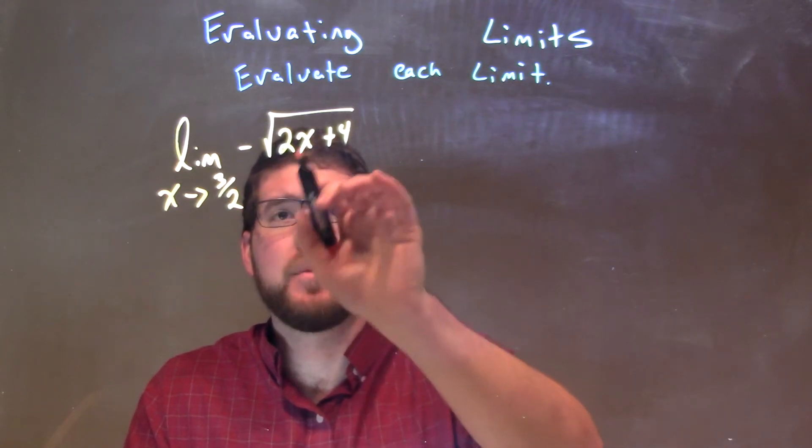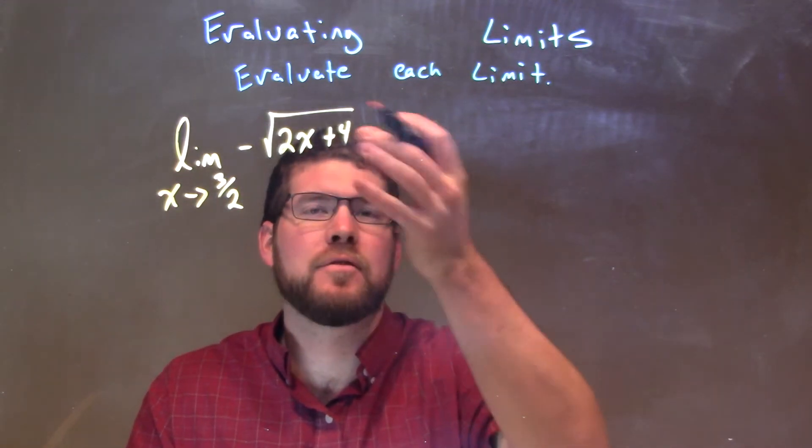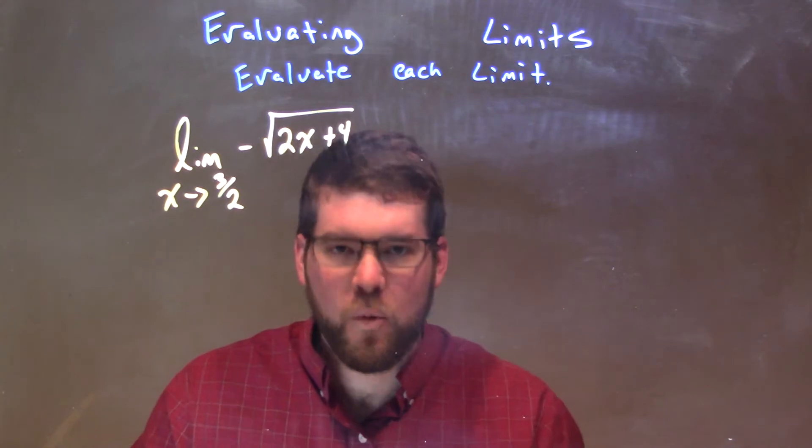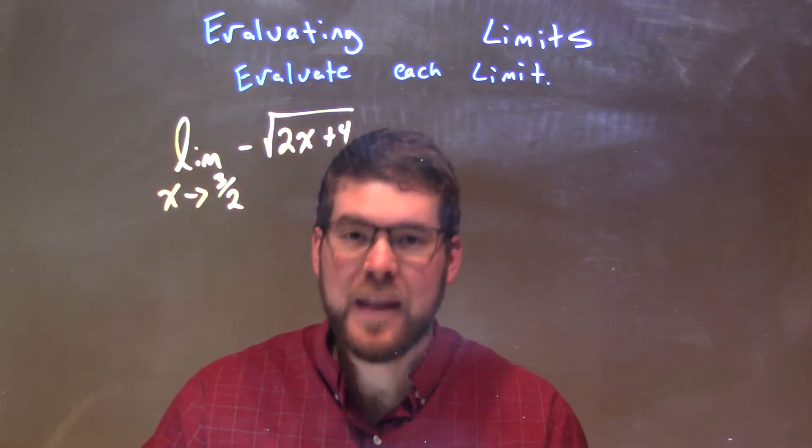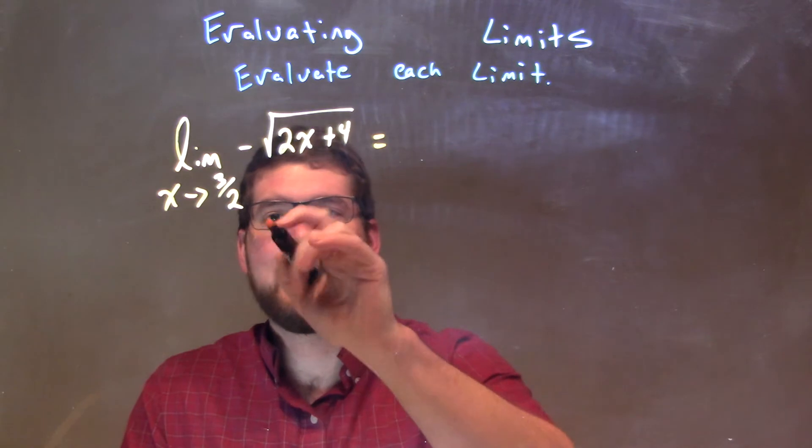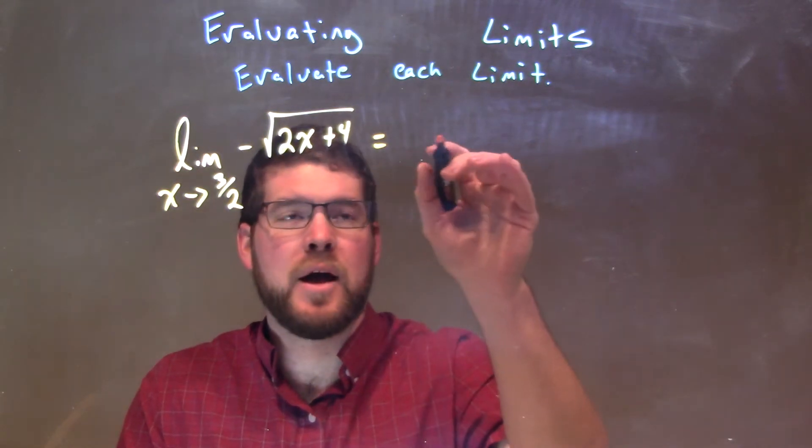Now, luckily, 3/2 is a positive number. 3/2 stays positive, plus 4 is going to stay positive. We're not going to have an issue of taking the square root of a negative. So, at this point, we're going to take the limit by plugging directly 3/2 in for x.